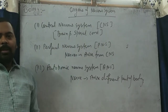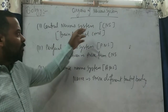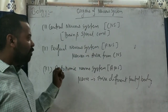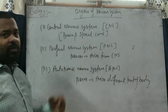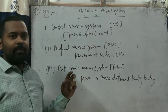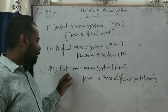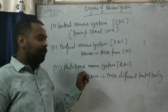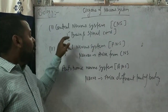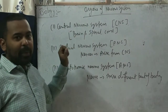Now, organs of the nervous system consist of three parts: the Central Nervous System (CNS), the Peripheral Nervous System (PNS), and the Autonomic Nervous System (ANS). The central nervous system possesses the brain and spinal cord. The peripheral nervous system possesses nerves that arise from the central nervous system. The autonomic nervous system possesses nerves which arise from different parts of the body. We need to learn about the brain and spinal cord.